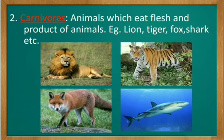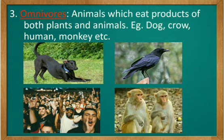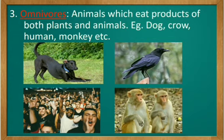Shark is a water animal. It eats other fishes and water animals in the ocean. Next we have omnivores — animals which eat both products of plants and animals. Examples: dog, crow, human being, monkey, etc. These are the animals which eat both plants and animals. We human beings are omnivore animals. See the pictures — dog, crow, human being and monkey. Now we have seen the three categories of animals: first herbivores, second carnivores, third omnivores. Hope you all understood the three categories of animals.